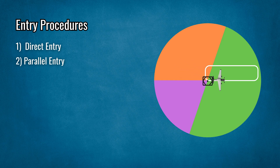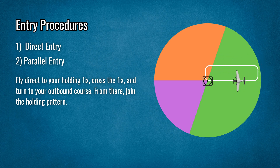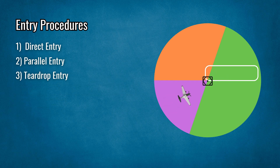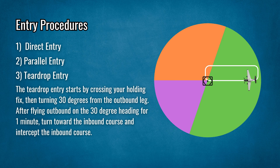Two: parallel entry. In this hold entry, fly to your holding fix and then turn outbound to parallel the course. Fly for one minute, then turn toward the protected side to intercept the inbound course — more than a 180-degree turn. Three: teardrop entry. The teardrop entry starts by crossing your holding fix, then turning 30 degrees from the outbound leg towards the protected side. After flying outbound on the 30-degree heading for one minute, turn toward the inbound course and intercept the inbound course — more than a 180-degree turn.